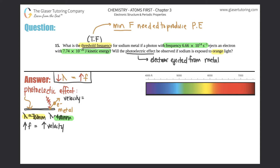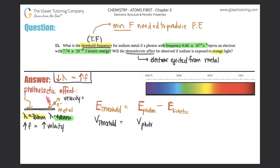Now we have to find the threshold frequency. There's a formula linked with energy: the energy of the threshold equals the photon energy minus the kinetic energy. We can substitute frequencies in place of energies, so the threshold frequency equals the photon frequency minus the frequency corresponding to the kinetic energy.